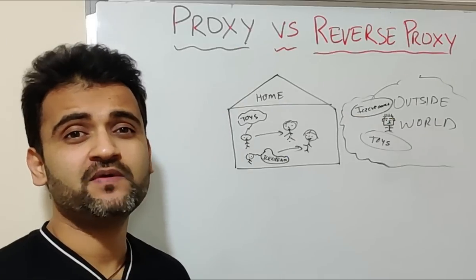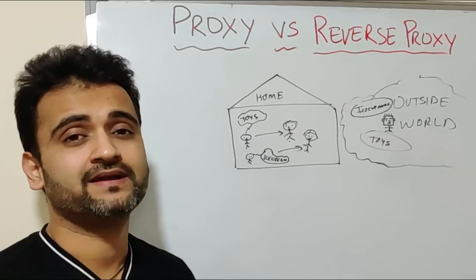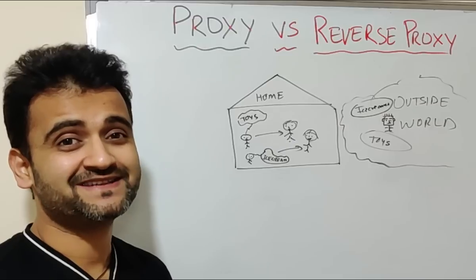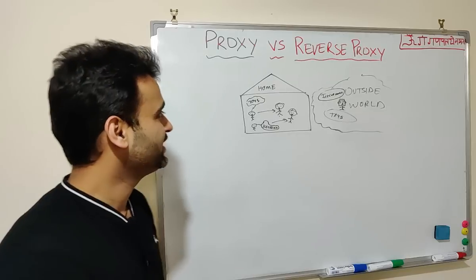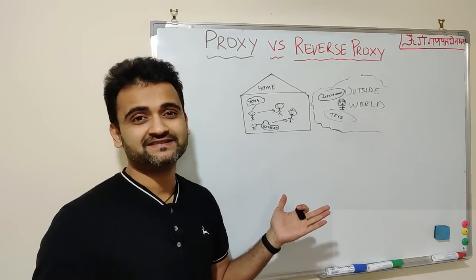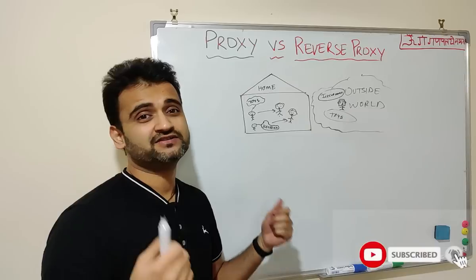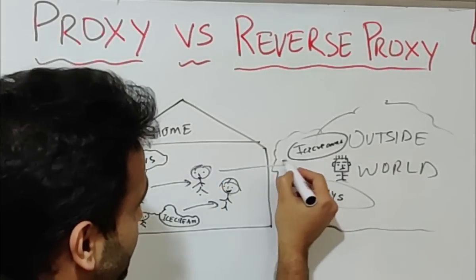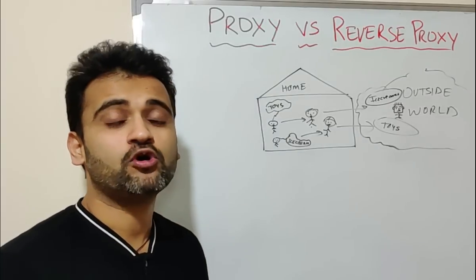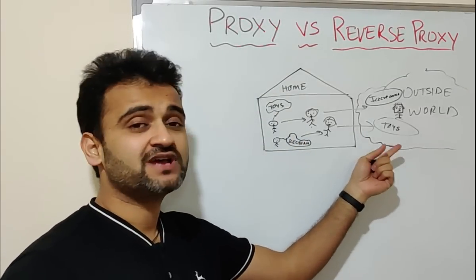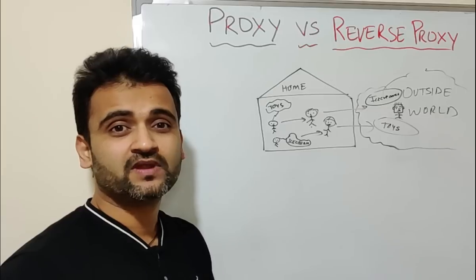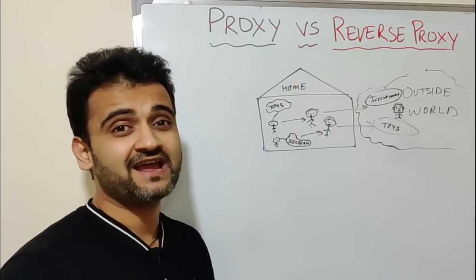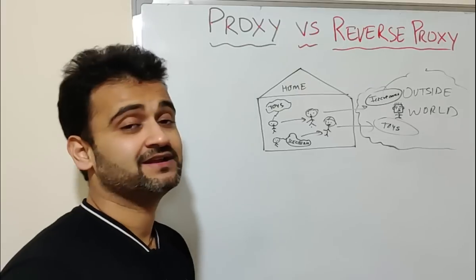In our childhood, whenever we wanted anything we always went to a parent and asked for it, and then it was up to the parents to decide whether that was a legitimate request to be fulfilled or not. Suppose you wanted a toy or an ice cream — your parents were the ones who would fulfill those requests. They went outside and got the stuff you asked for, never letting the outside world come in contact with you, shielding you until you were mature enough to handle it yourself.